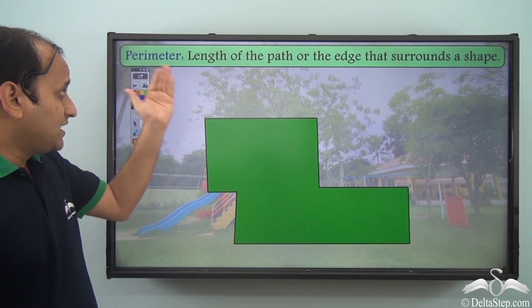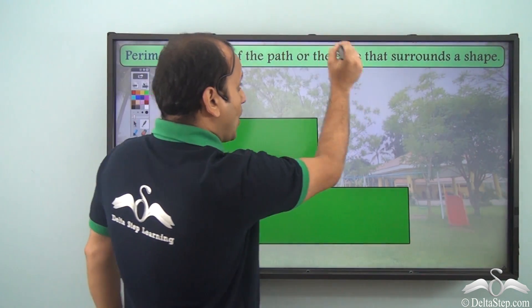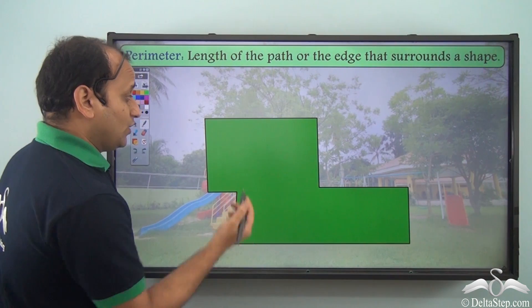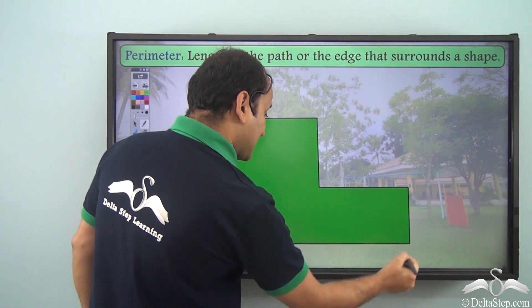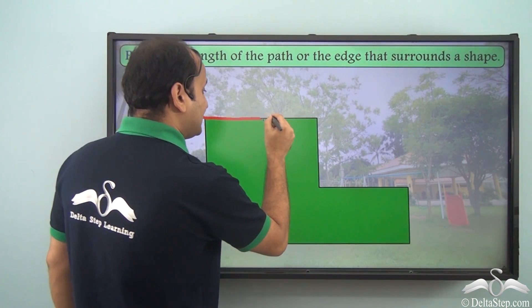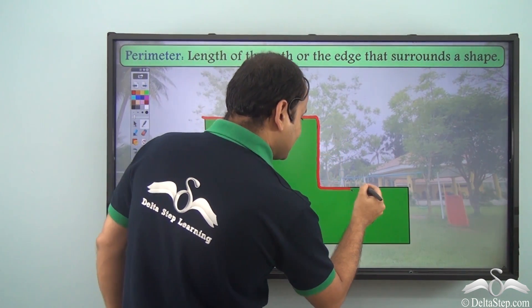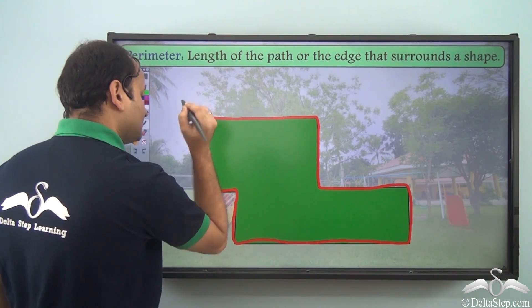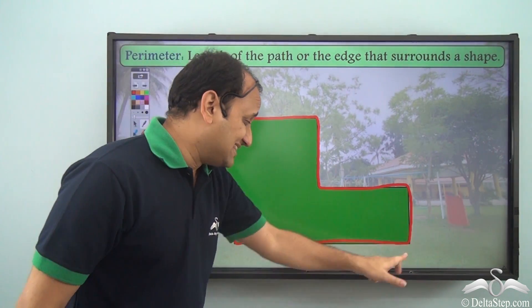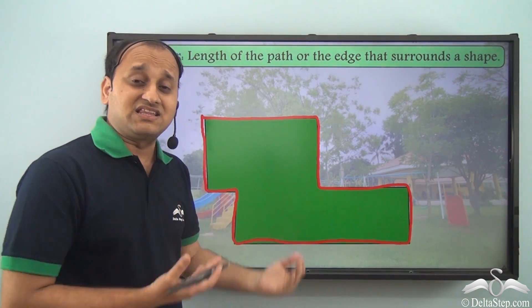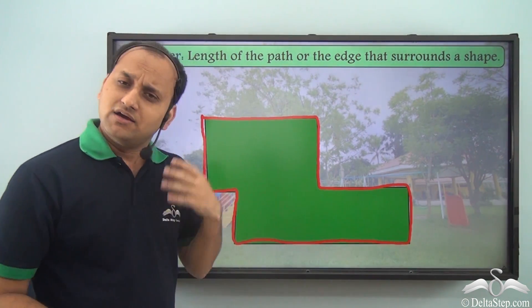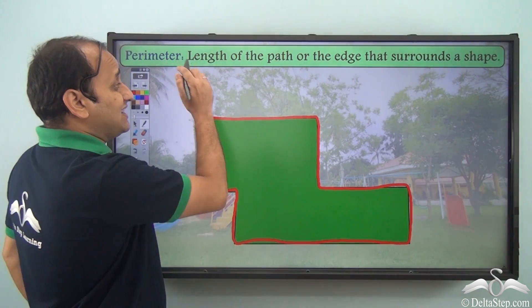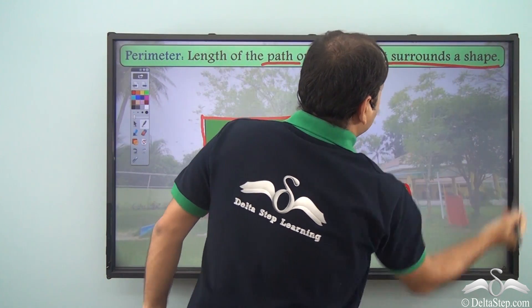Well, he said perimeter is length of the path or the edge that surrounds a shape. So in this case, what will be the perimeter? Well, length of the path or edge that surrounds the shape. So it will be nothing but length of this entire boundary of the park. If you know the length of this boundary, then this is nothing but perimeter of the park. In fact, for any shape this is what we call the perimeter. So it is nothing but length of the path or edge that surrounds a shape.